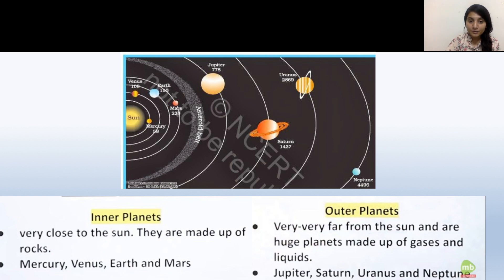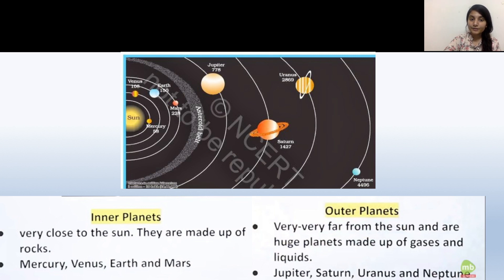From the asteroid belt inward, the planets are called inner planets. They are made up of rocks — Mercury, Venus, Earth, and Mars. The outer planets are far away from the Sun and are usually made up of gases and liquids. Saturn and Uranus also have rings, which are not found in the inner planets.